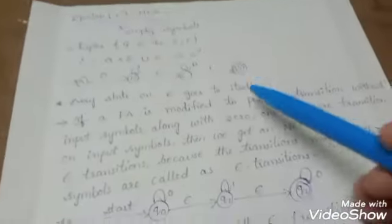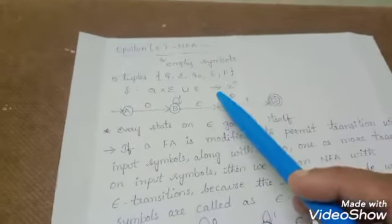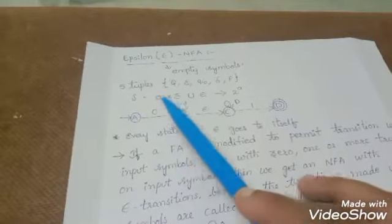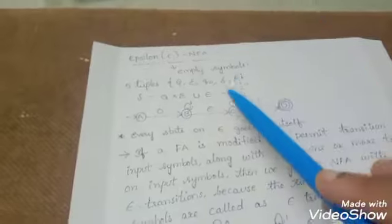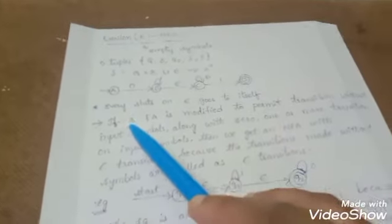So now let's see here. Without taking any input, by taking input as epsilon, if we are able to move our string to the next state, then that is called epsilon NFA.